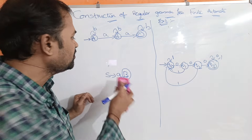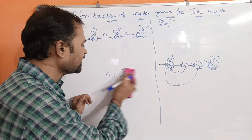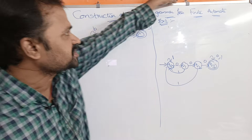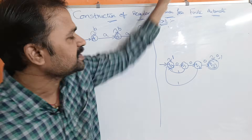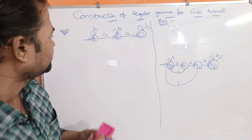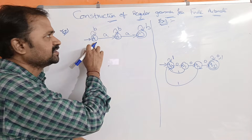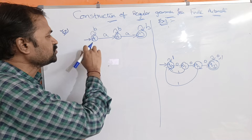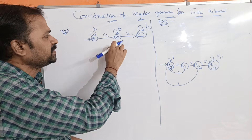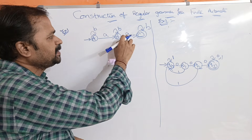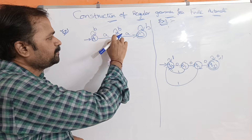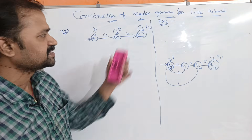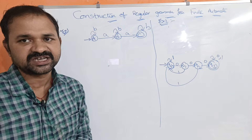Regular grammar means by default it is right-linear grammar. Let us construct the grammar. Two examples are given. In the first example, A is the initial state. A on b goes to A, A on a goes to B. B on a goes to C, B on b goes to B. C on b goes to C. C is the final state.